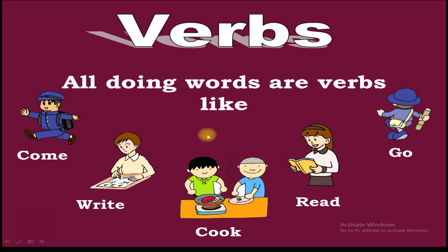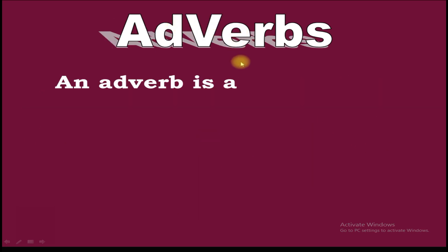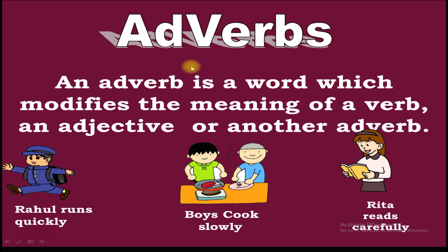All these are examples of verbs. The next part of speech is adverbs. An adverb is a word which modifies the meaning of a verb, an adjective, or another adverb. For example: Rahul runs quickly. Boys cook slowly. Rita reads carefully. These are the examples of adverbs.